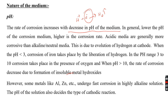However, some metals like aluminum and zinc undergo fast corrosion in highly alkaline solution. The pH of the solution also decides the cathodic reaction — it may take place either by the liberation of hydrogen or by the absorption of oxygen. If pH is very low, liberation of hydrogen occurs; if pH is very high, formation of hydroxyl ions occurs.